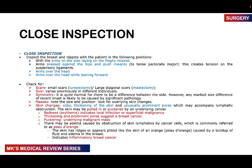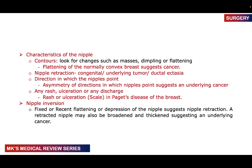Check for any obvious masses, skin changes, color changes, thickness, and unusually prominent pores — what we call peau d'orange — which looks like an orange peel. Check if the skin is pulled in or puckered, which may point towards cancer. Check for redness or erythema, which could suggest local infection or superficial malignancy. Any prominence of pores may suggest inflammatory breast cancer, where cancer cells block skin lymphatics.